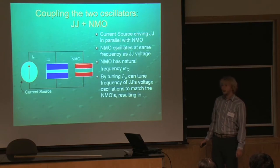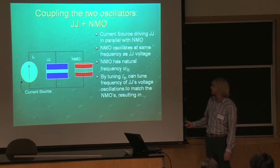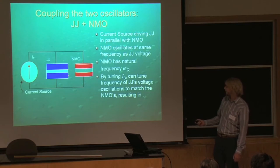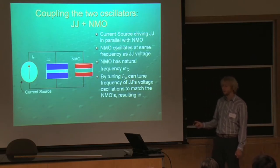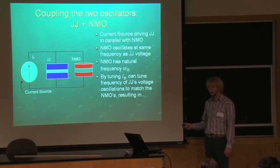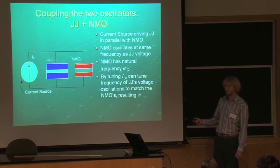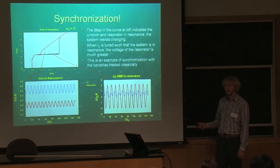One setup we're looking at is a coupling where we have a current source, and then the Josephson junction and the oscillator in parallel with each other, and then you run a current across both of them. Because they're in parallel, the Josephson junction and the NMO will be forced to oscillate at the same frequency. However, the NMO has a natural frequency, and you can tune the Josephson junction — the junction's voltage will oscillate at a different frequency depending on the bias current — such that the junction's voltage oscillates at the same natural frequency as the NMO. And when that happens, you get a sort of synchronization resonance effect between the junction and the oscillator.